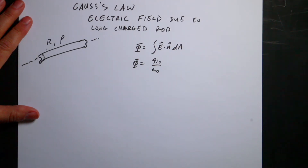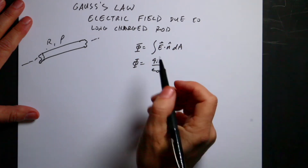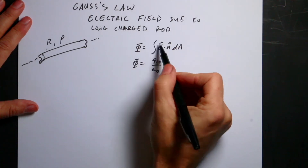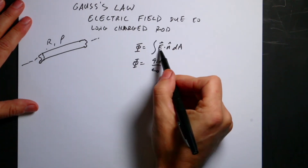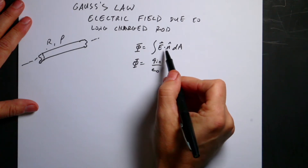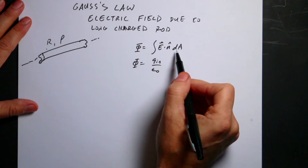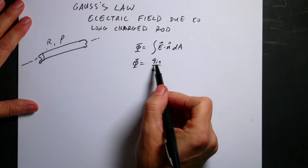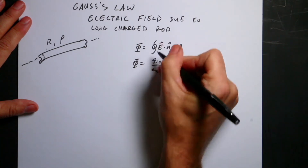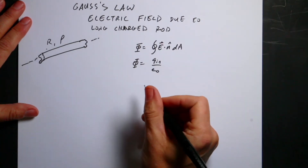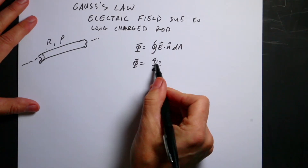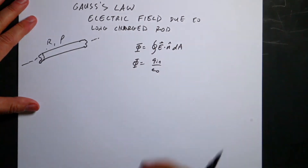Just a brief recap of Gauss's law: it says that the electric flux — defined as the surface integral of E dot N-hat over a closed surface — is going to be equal to the total charge inside divided by epsilon naught.